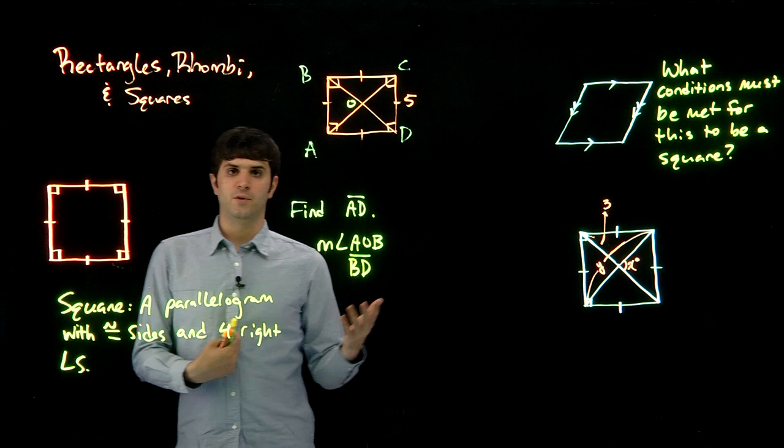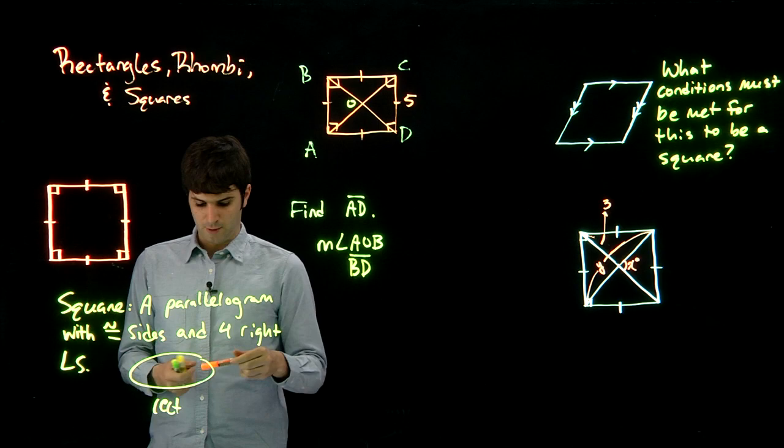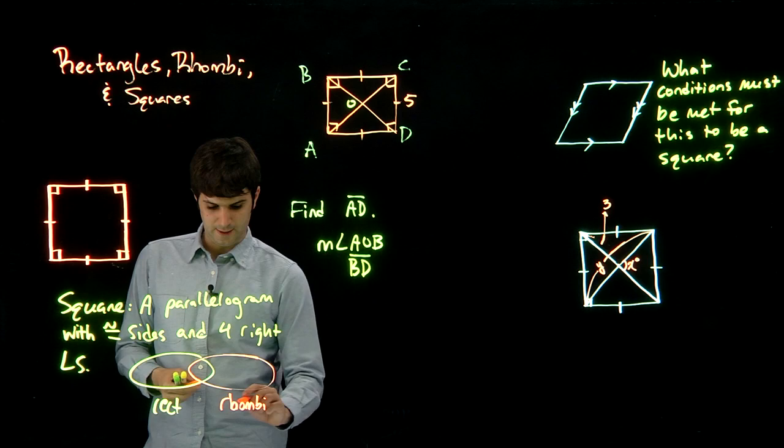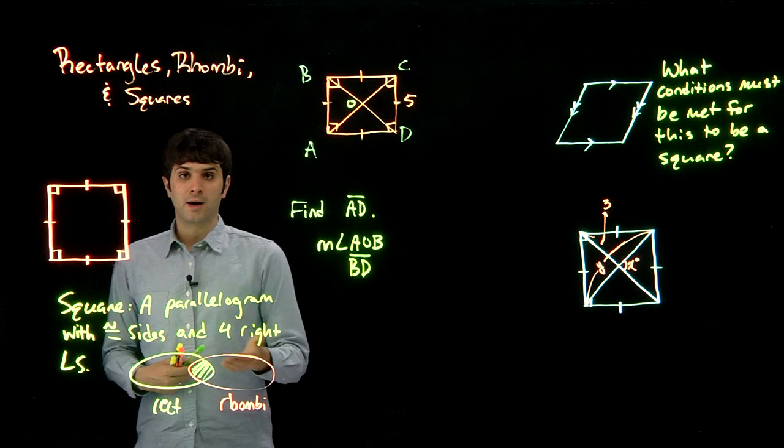We'll talk more about the relationship between them in the next chapter, but basically if these are rectangles and these are rhombi, R-H-O-M-B-I, then this area here, this intersection, would be squares.